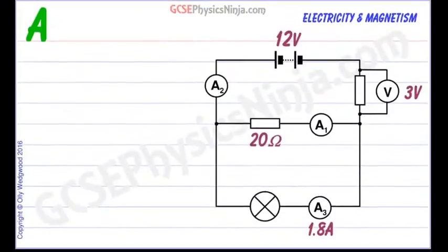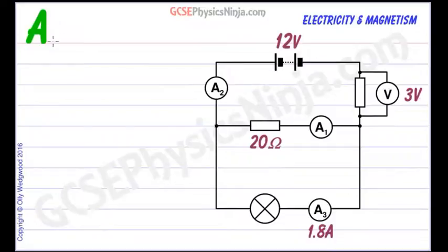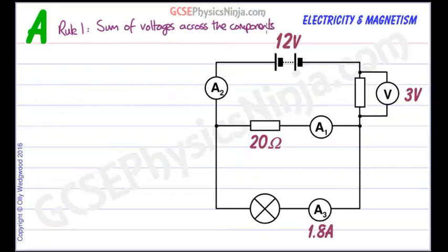Let's first of all take a look at the first rule you can use to analyze circuits. Rule one: we can say that the sum of voltages across the components in any series loop equals the sum of the supply voltages.